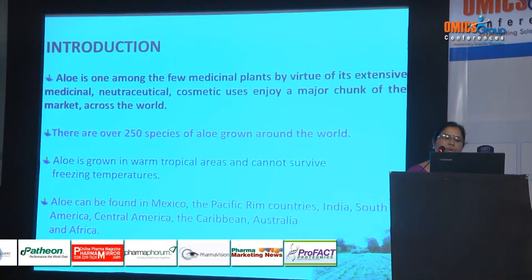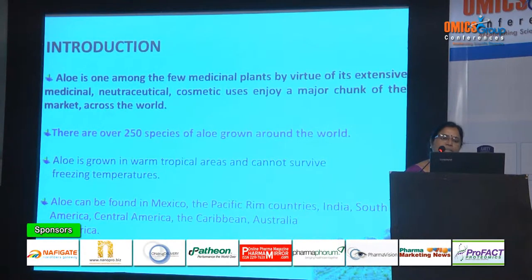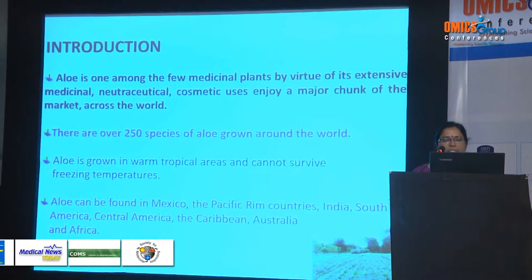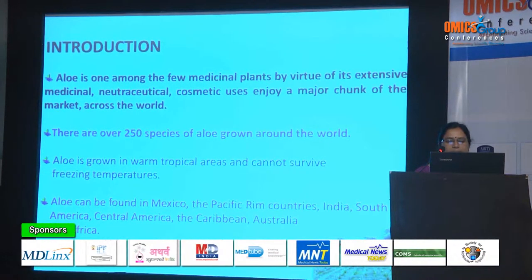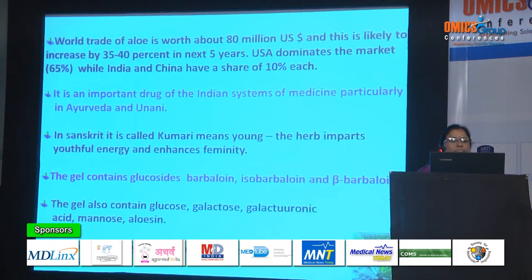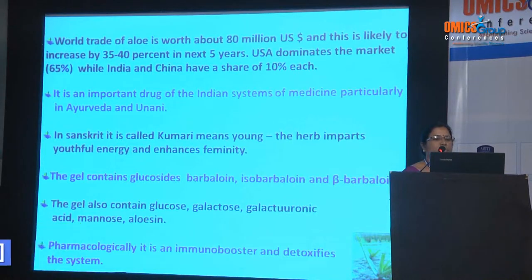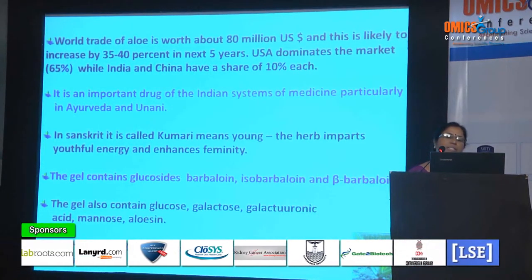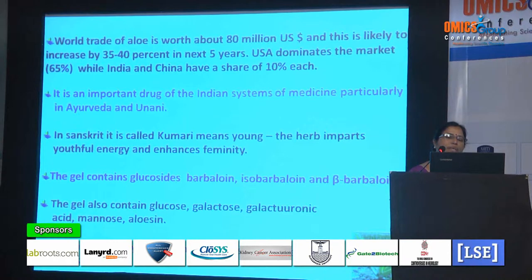Aloe can be grown in warm tropical areas and cannot survive freezing temperatures. Aloe can be found in Mexico, the Pacific Rim countries, India, South America, Central America, the Caribbean, Australia, and Africa. World trade of Aloe is worth about 80 million US dollars, and this is likely to increase by 35 to 40% in the next 5 years.